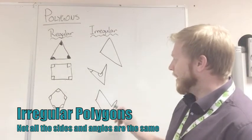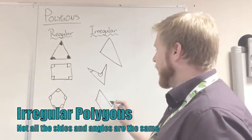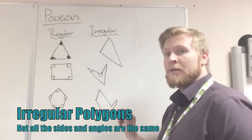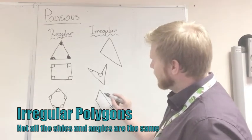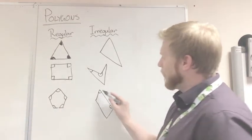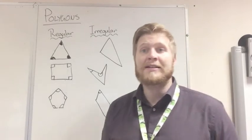This one here, we have another five-sided shape, so another pentagon, but this is an irregular pentagon, because as we can see, the lengths are different sizes, that one's a lot bigger than that, and the angles as well, that one's a lot bigger than that one. And that is simply the difference.